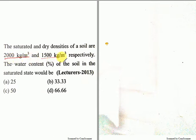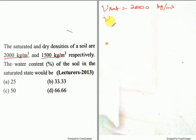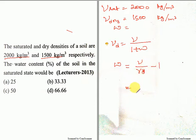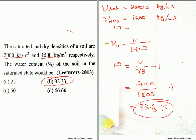The saturated and dry unit weights of the soil are given. γsat is equal to 2000 kg per meter cube and γdry is equal to 1500 kg per meter cube. The water content of the soil in the saturated state is to be found. The formula is: γdry equals γ divided by (1 plus w), so w equals γ by γd minus 1. That gives 2000 divided by 1500 minus 1, which equals 33.33 percent. Option B is the right answer.